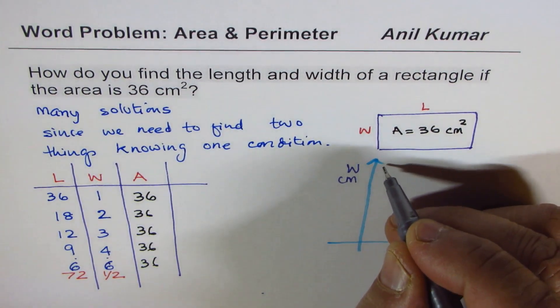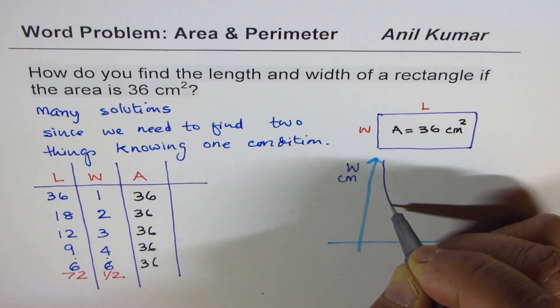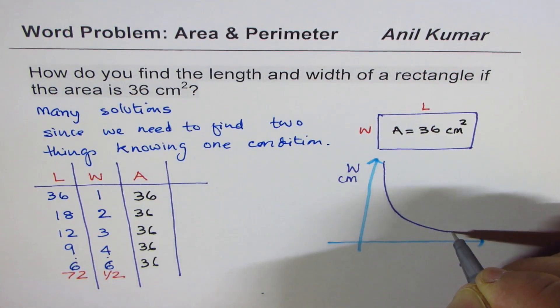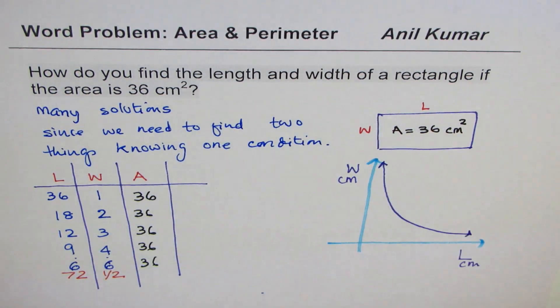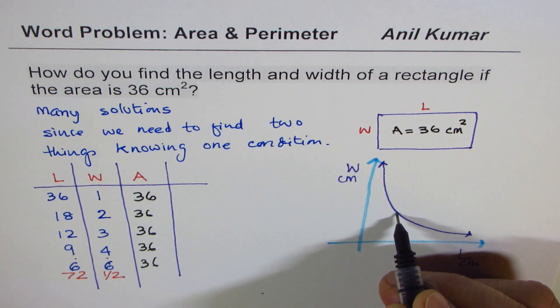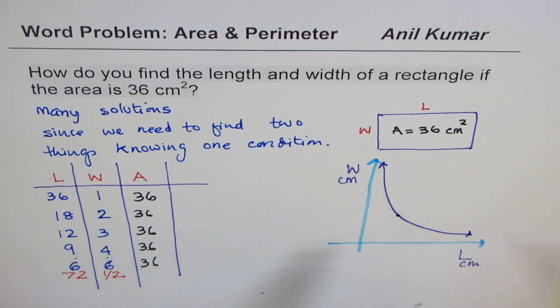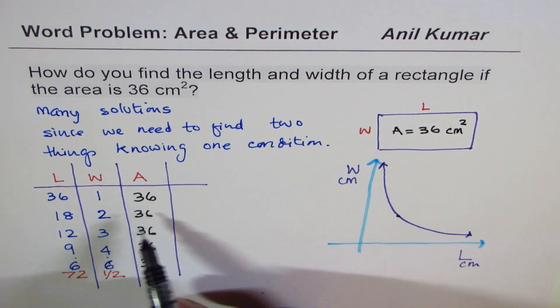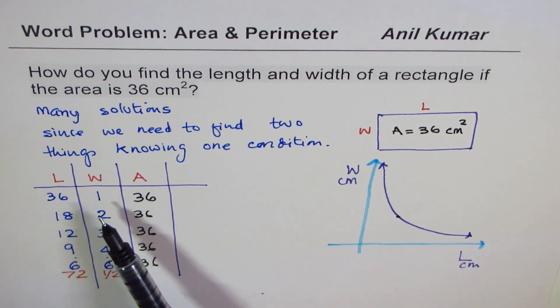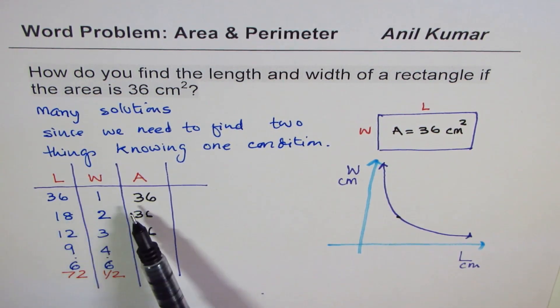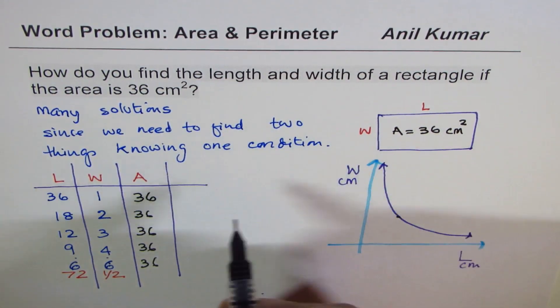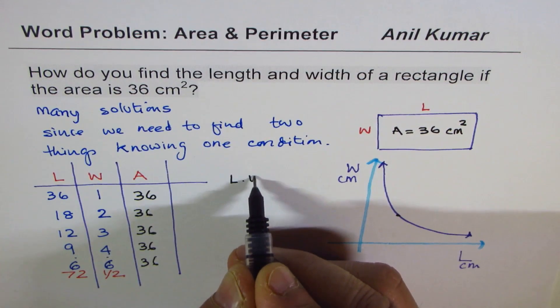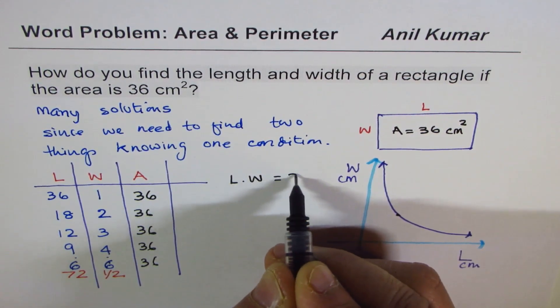So we'll get something like this. We can get a lot of values where somewhere here, the value is like 6 and something like this, a curve. So if I take 1, the product is 36.